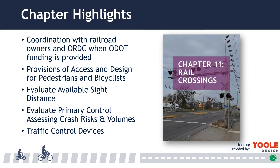Rail crossings can present unique challenges to non-motorized traffic. Inadequate traffic control devices may lead to confusion about how and when it is safe to cross the tracks. This chapter provides guidance to support decision making related to the identification of appropriate traffic control devices for walkways and bikeways for at-grade rail crossings where traffic signals are not provided, in accordance with Part 8 of the Ohio MUTCD.